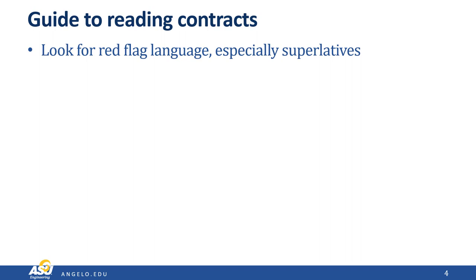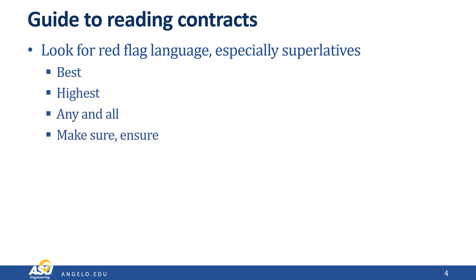Some quick guidelines to reading contracts. The first is to look for red flag language, especially superlatives — things like 'best,' 'highest,' 'any and all,' 'make sure' or 'ensure.' These are things that, if you say them, it pegs the meter to one side. There is nothing better than 'best.' If you say you're going to give the best service to your client, that means nobody else in the entire world is going to do a better job than you. Whenever you see these words, little red flags should pop up.